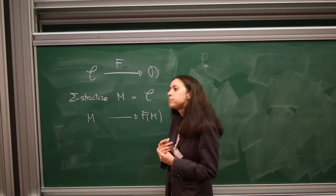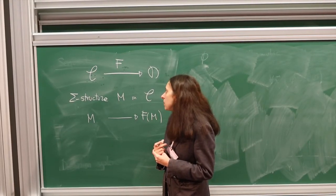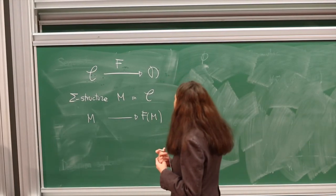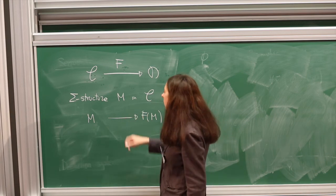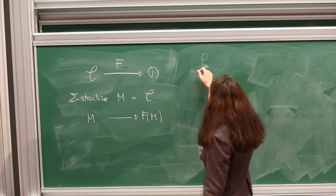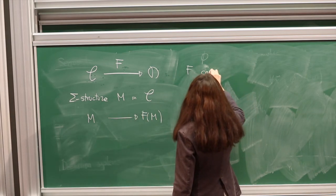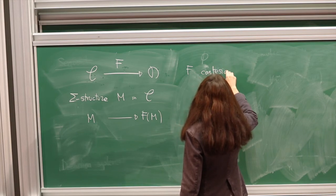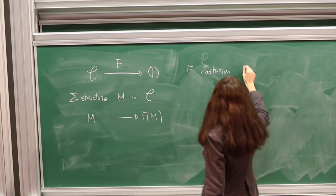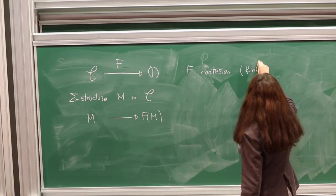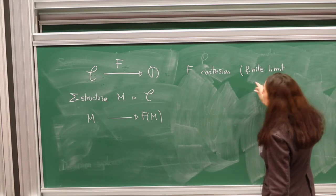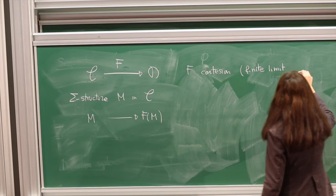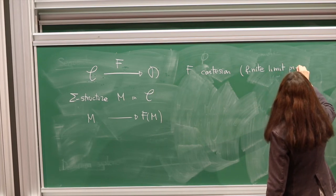A student asks: don't you need the functor to preserve monomorphisms too, for relations? After some discussion, the answer is that you need Cartesian functors — that is, finite limit preserving functors.